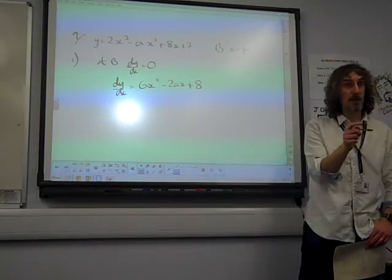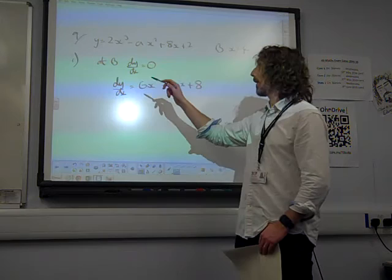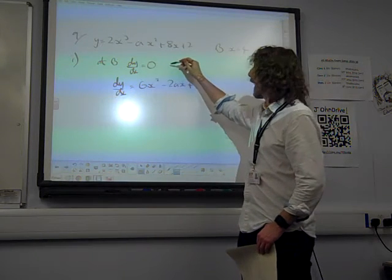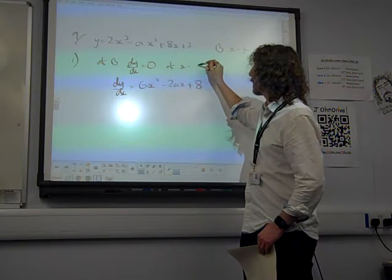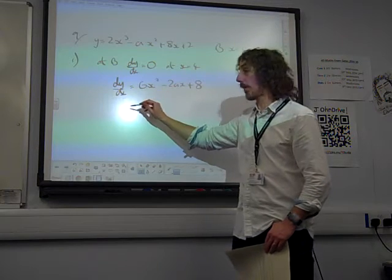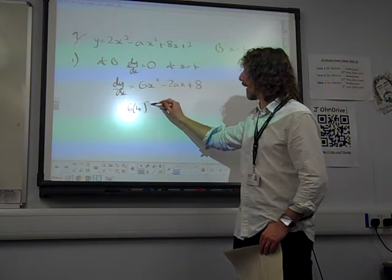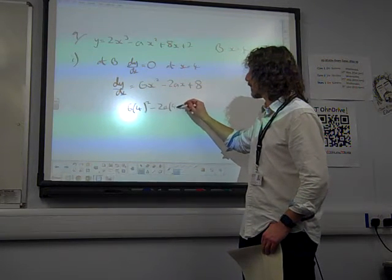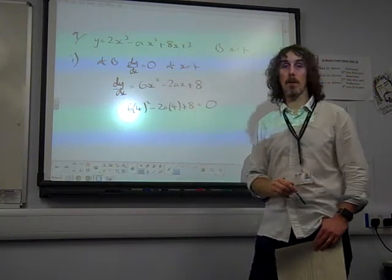Now this next bit you actually get two marks for just one line of working here, because dy by dx is 0 at the point where x is 4. So if we do all of that together, 6 times 4 squared minus 2a times 4 plus 8 must be equal to 0.